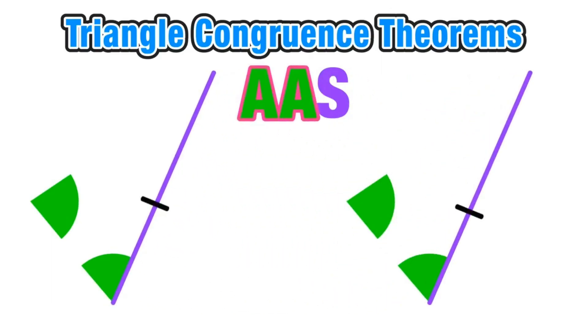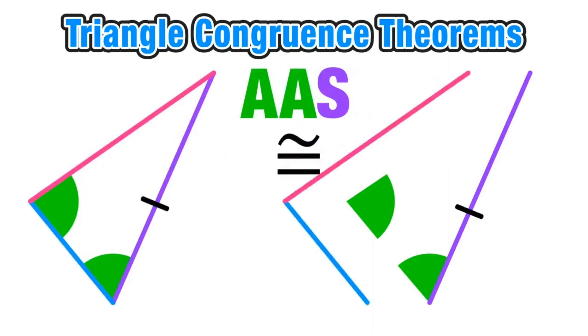So you have two angles in a row and then a side next to them. And now by completing this triangle, we can see why the angle-angle-side theorem proves that two triangles are congruent.